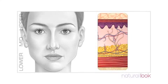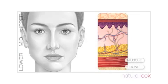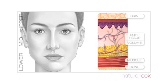The outward signs of ageing are not just a result of what is happening on the surface. The ageing process affects all four layers of the face – bone, muscle, volume and skin. And these four layers combine to reveal what we see on the outside.